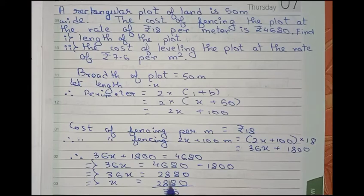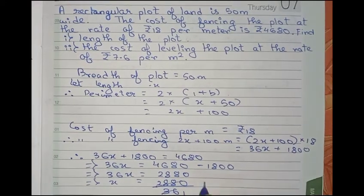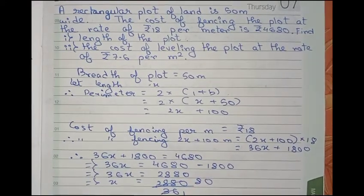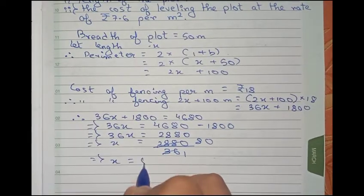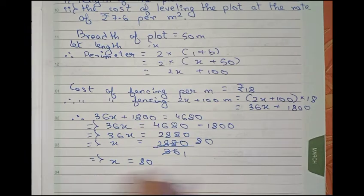If you divide 2880 by 36, it will become 80. Therefore, x equals 80, and therefore our length is equal to 80 meters.